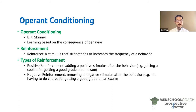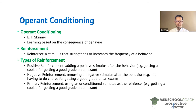Next we have primary reinforcement. Here, an unconditioned stimulus is used as the reinforcer. In our example where we gave the student a cookie for getting a good grade on an exam, that's an example of an unconditioned stimulus because the cookie in itself is positive. When the student eats the cookie, that produces natural happiness — the student is automatically happy.